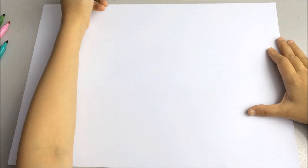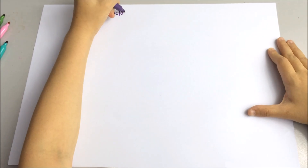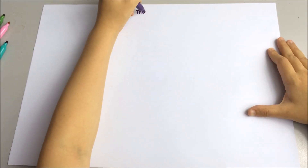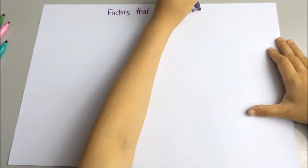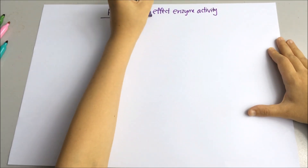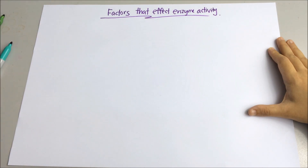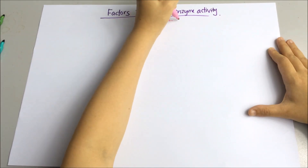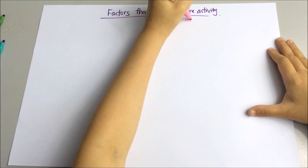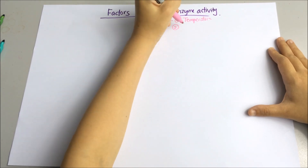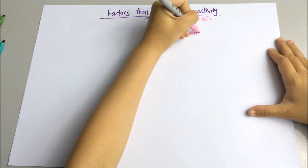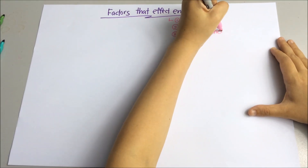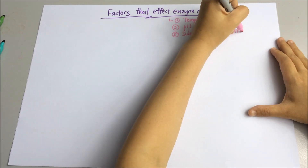Hi everyone, today we will be talking about factors affecting enzyme activity. In the previous video, we talked about how enzymes work by using the lock and key hypothesis. The effectiveness of an enzyme can be affected by its environmental conditions. There are 4 factors that you need to know: firstly temperature, second pH, third substrate concentration, and fourth enzyme concentration.